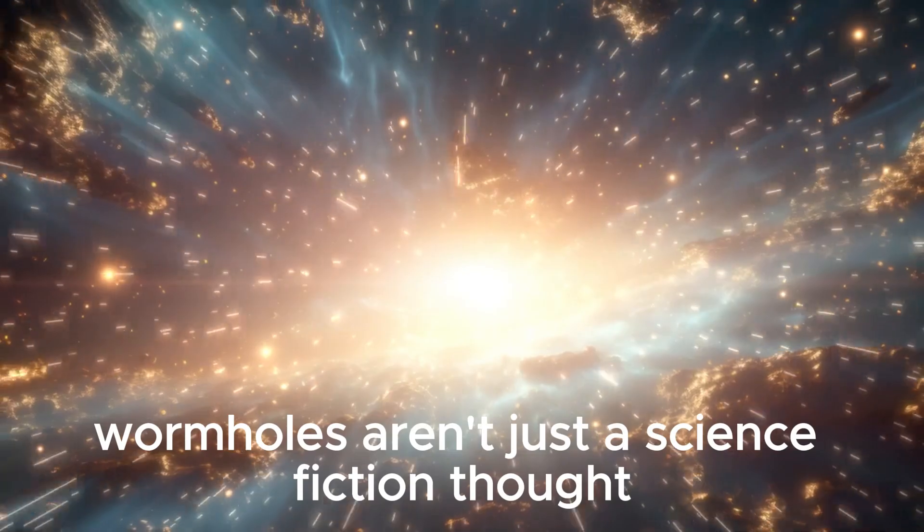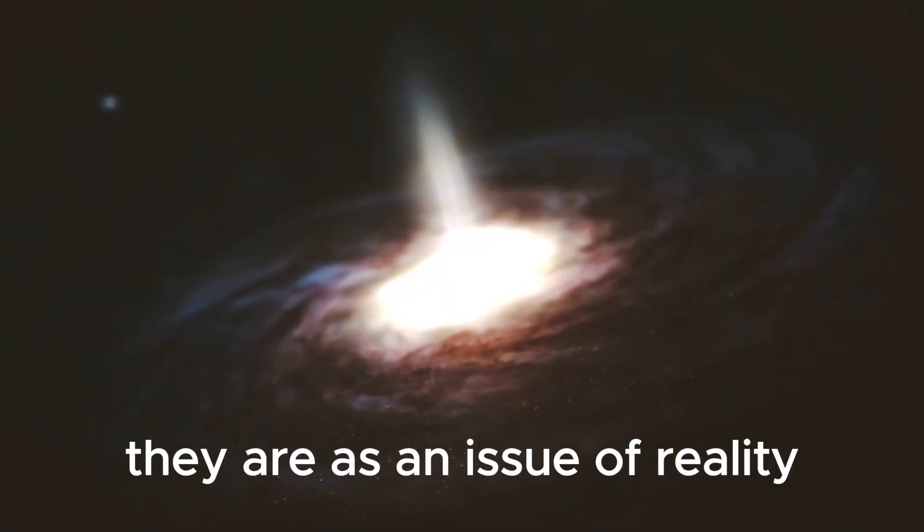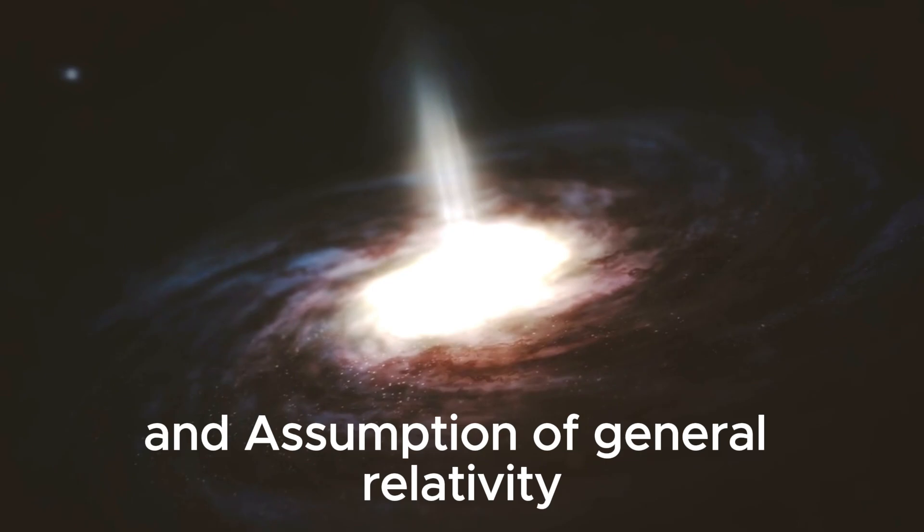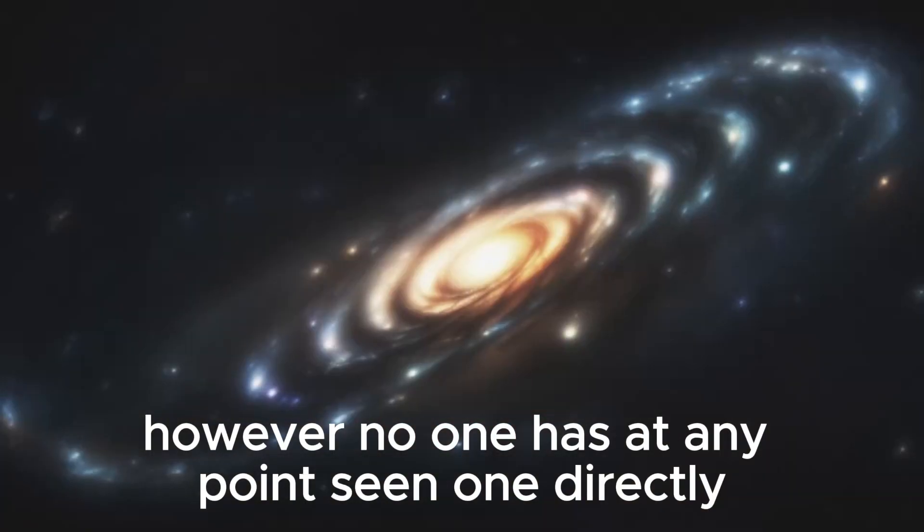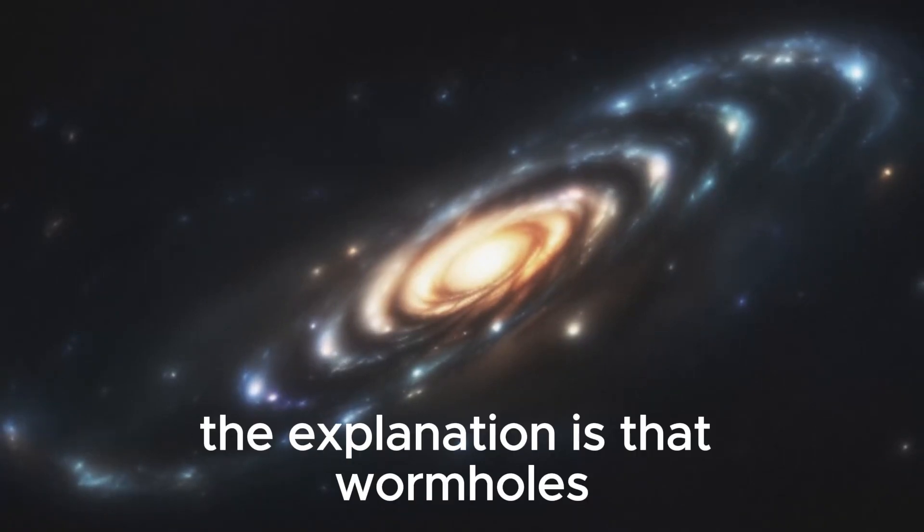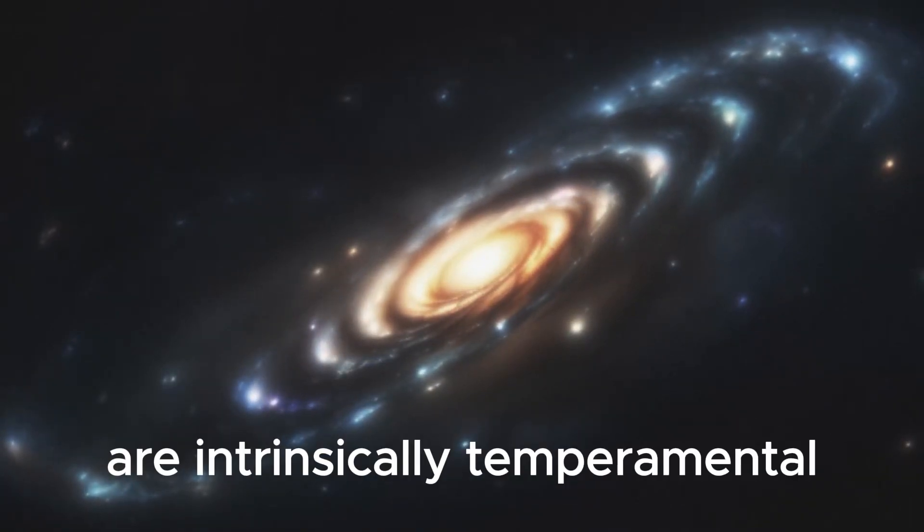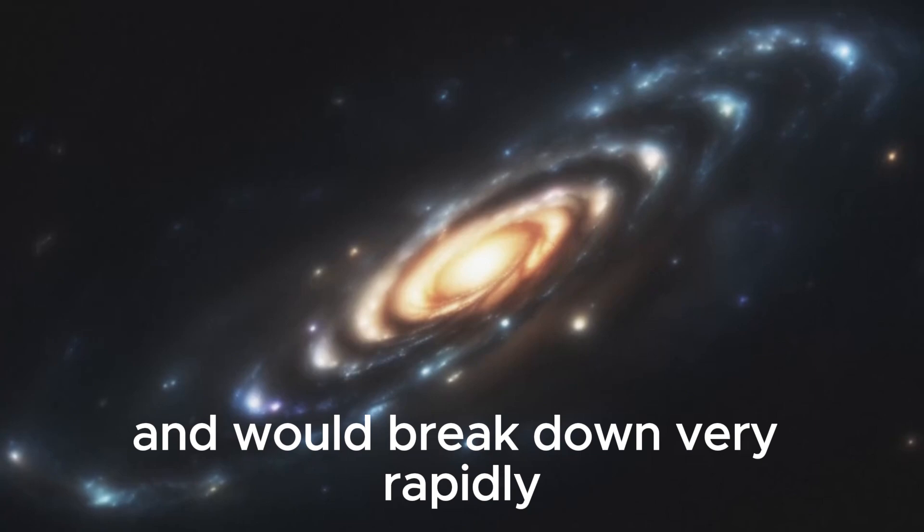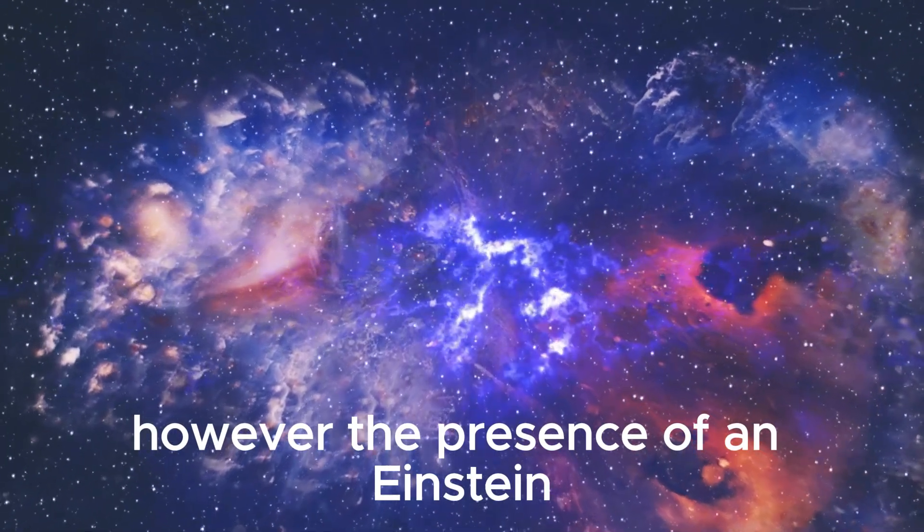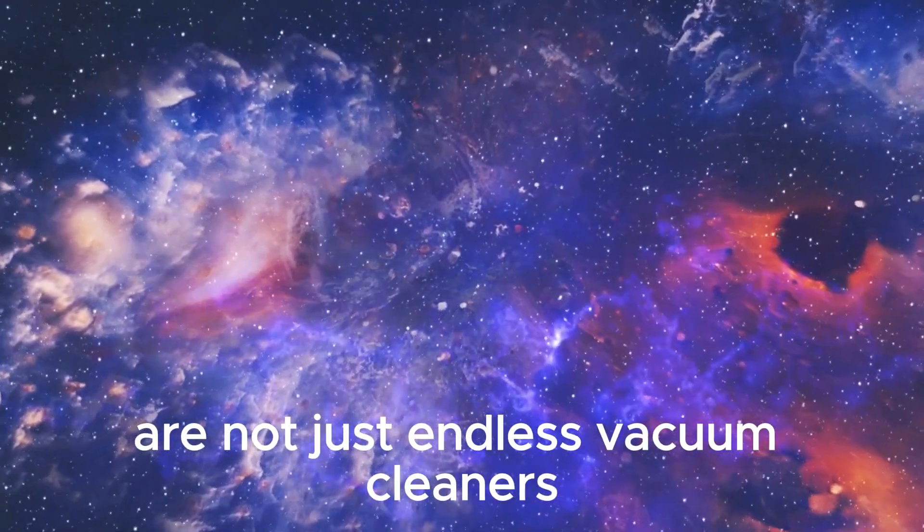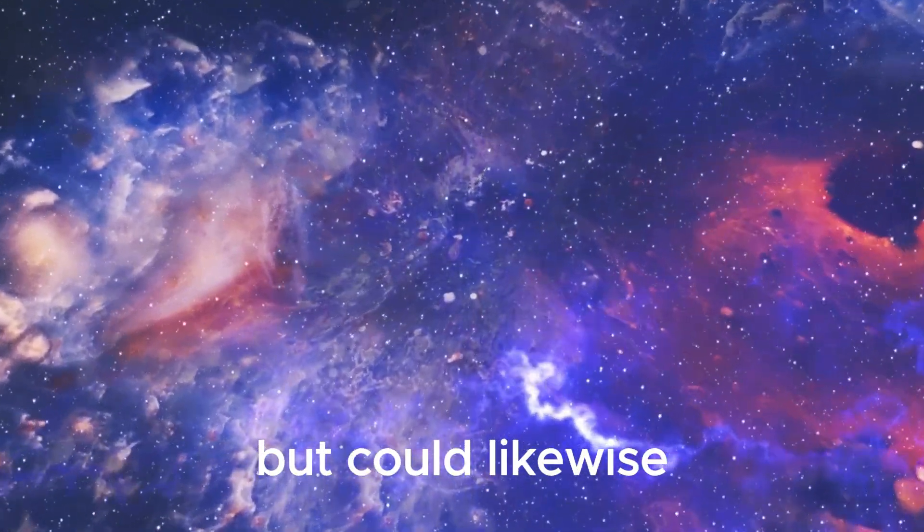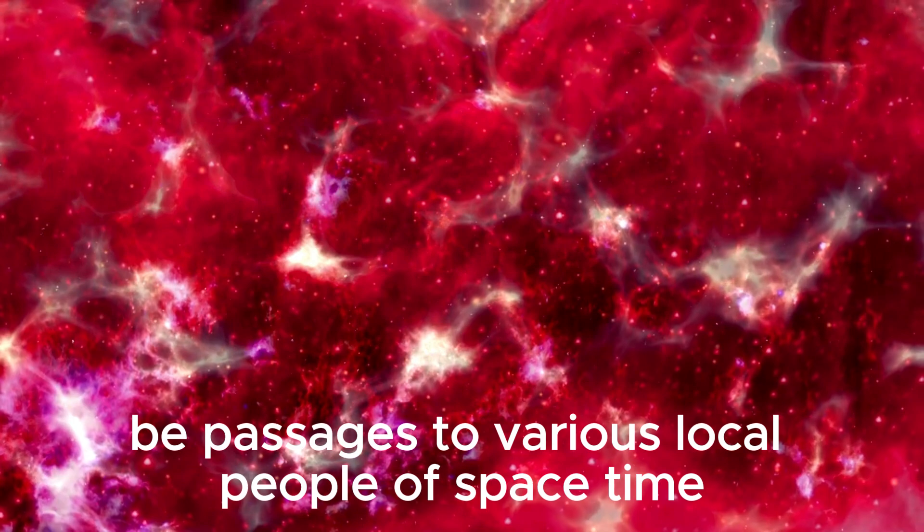Wormholes aren't just a science fiction idea. They are, as a matter of fact, a prediction of general relativity. However, no one has ever seen one directly. The explanation is that wormholes are inherently unstable and would collapse very quickly. However, the existence of an Einstein-Rosen bridge would imply that black holes are not just endless vacuum cleaners but could also be passages to different locations in space-time.